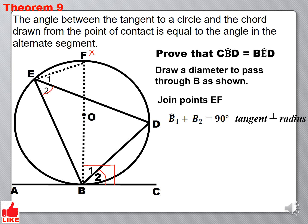Also, the angles at point E are also equal to 90 degrees because angle E is an angle in a semicircle since our line that we have drawn is a diameter. So, E1 plus E2, they are equal to 90 degrees.